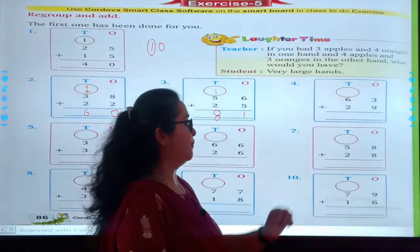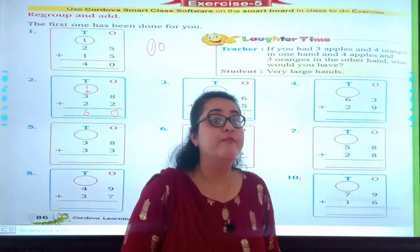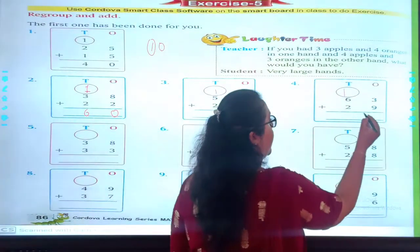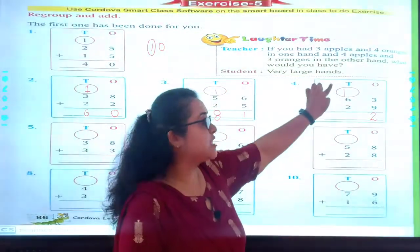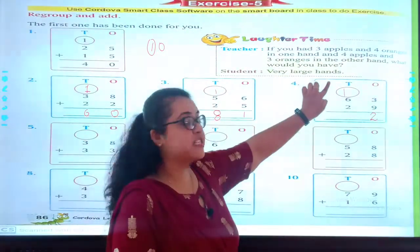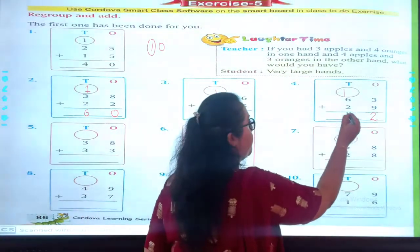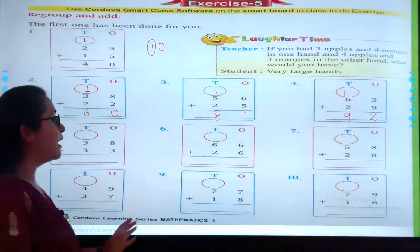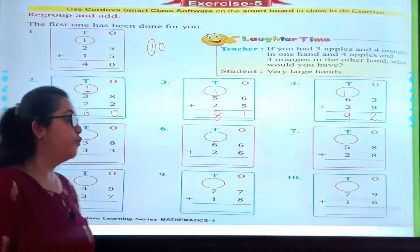Now let's solve the fourth one. 3 plus 9, 9 plus 3 is 12. So 12 means 1 goes up, 2 stays. 6 plus 1 is 7, plus 2 is 9. Okay? So students, now in the remaining sums, you will be solving as a part of your worksheet.